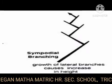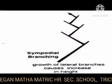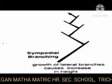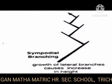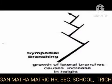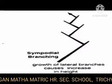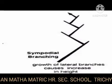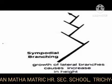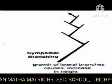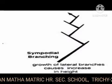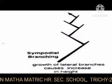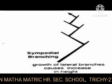In determinate growth, the terminal bud ceases to grow after a period of growth, and the further growth is taken care of by successive or several lateral meristems or buds. This type of growth is also known as sympodial branching, example Cycas.